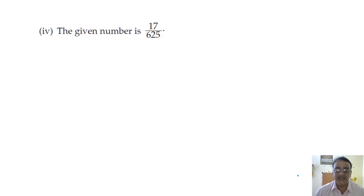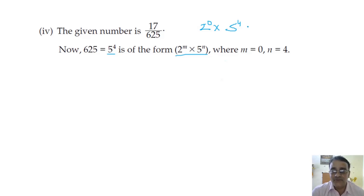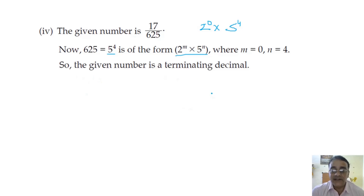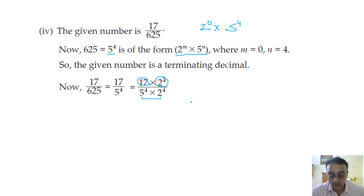Next: 17/625. The prime factors of 625 are 5⁴. We can write this as 2⁰ × 5⁴, which is in the form of 2^m × 5^n where m = 0 and n = 4. So the given number is a terminating decimal. Now to make both powers equal to 4, we multiply and divide by 2⁴ = 16. The denominator becomes (2 × 5)⁴ = 10⁴.